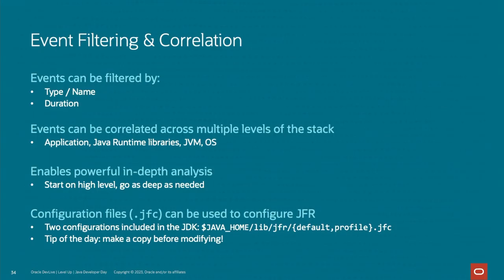I mentioned filtering earlier, and I'll also mention correlation. Filtering: you can get all kinds of data from Flight Recorder, but you need to keep that data bounded. We have good defaults where we filter both on the type of event and on duration, so we capture valuable information without blowing up the in-memory or on-disk footprint. Flight Recorder does this filtering on the fly — if you remember the commit method, that commit method already does the filtering. It looks at the duration and only writes data to the stream if the event exceeds the threshold and is enabled.